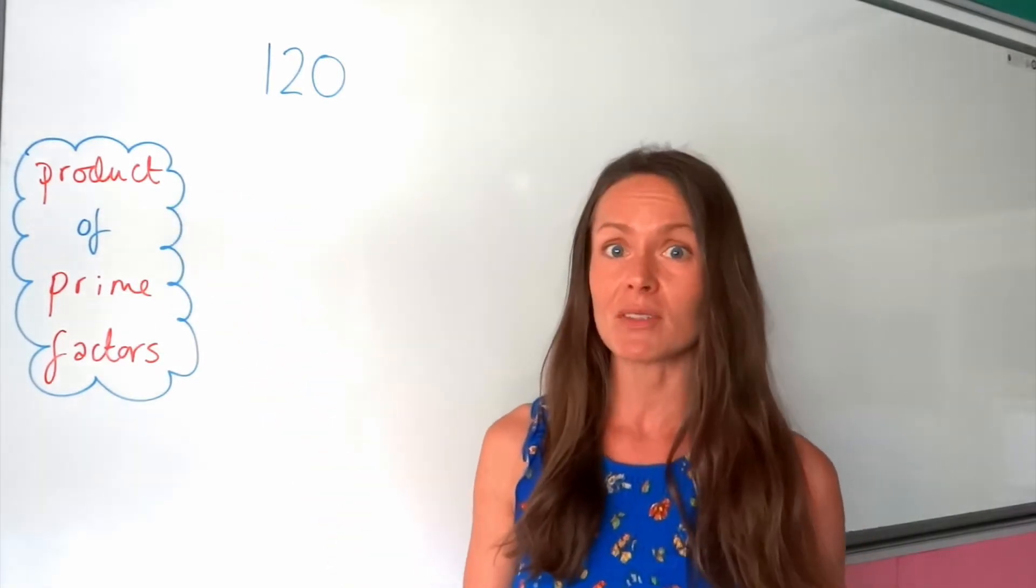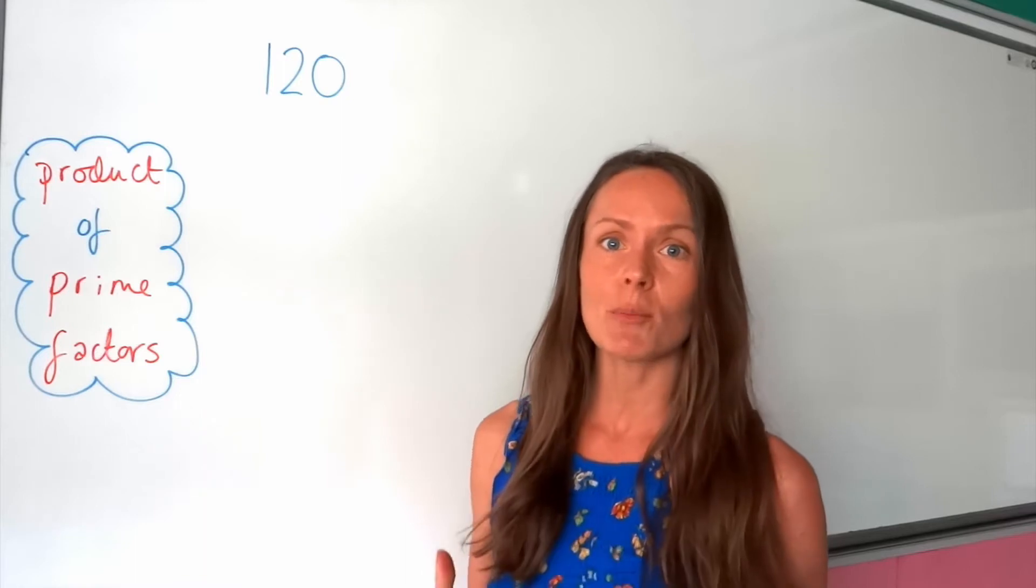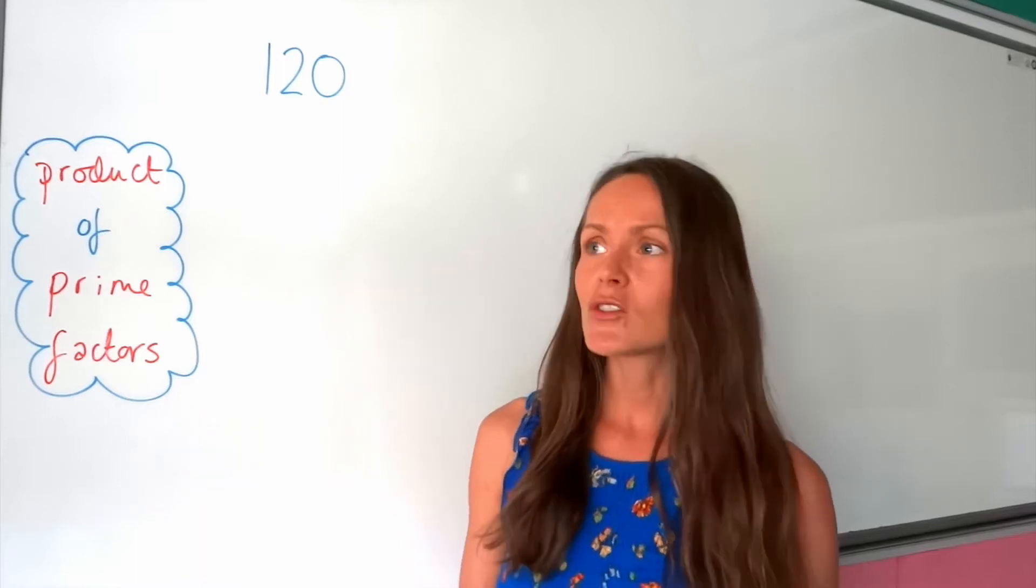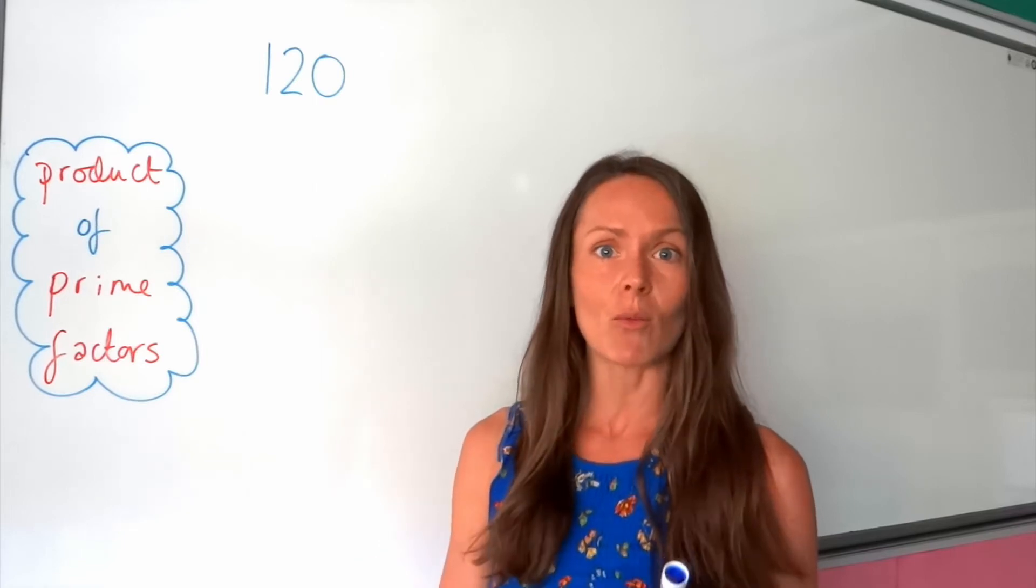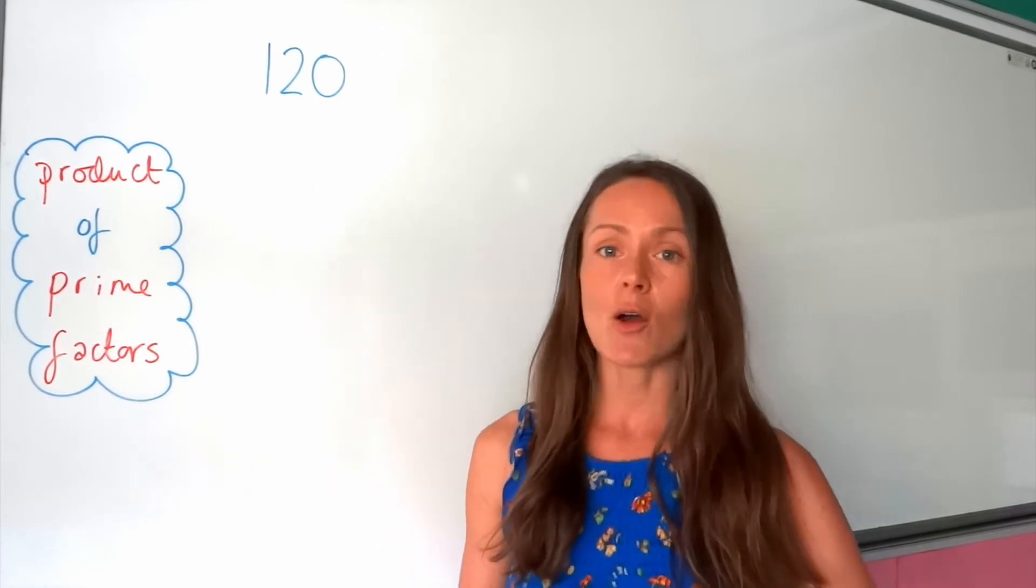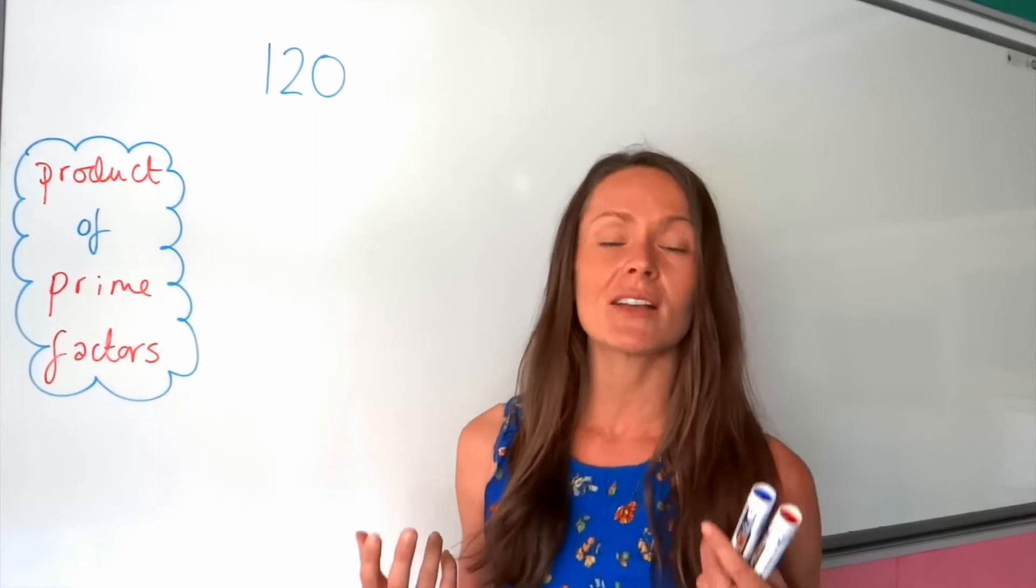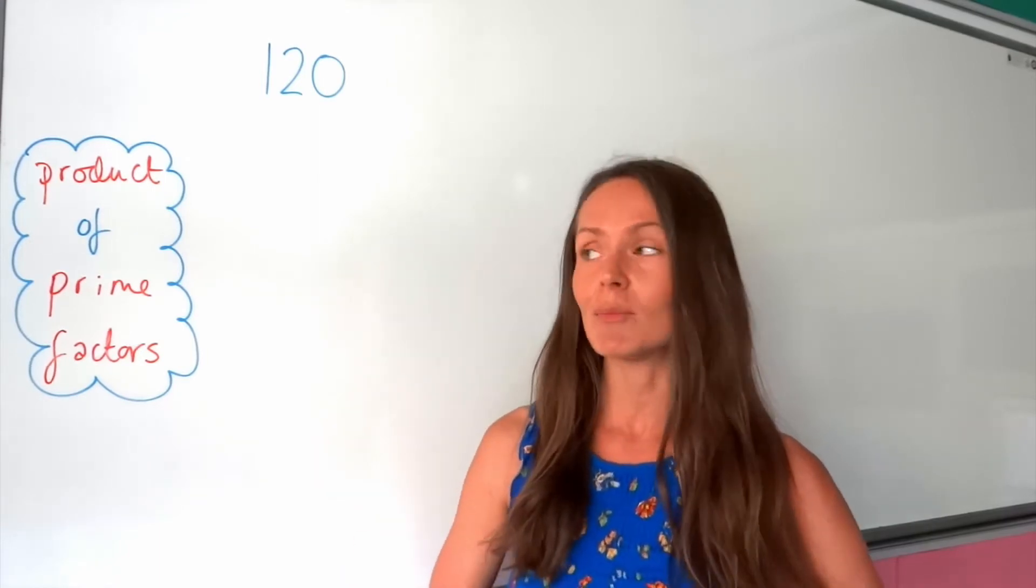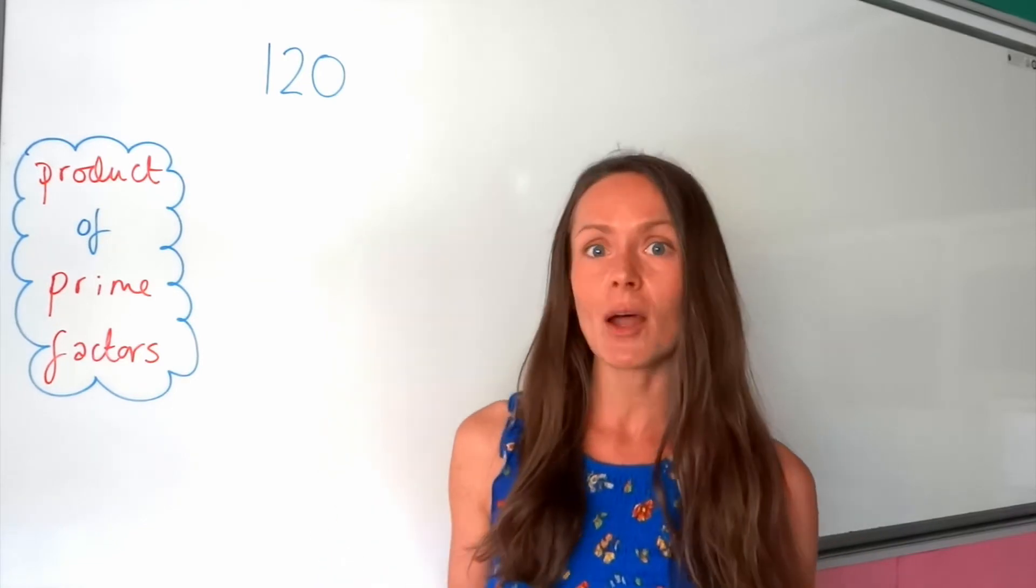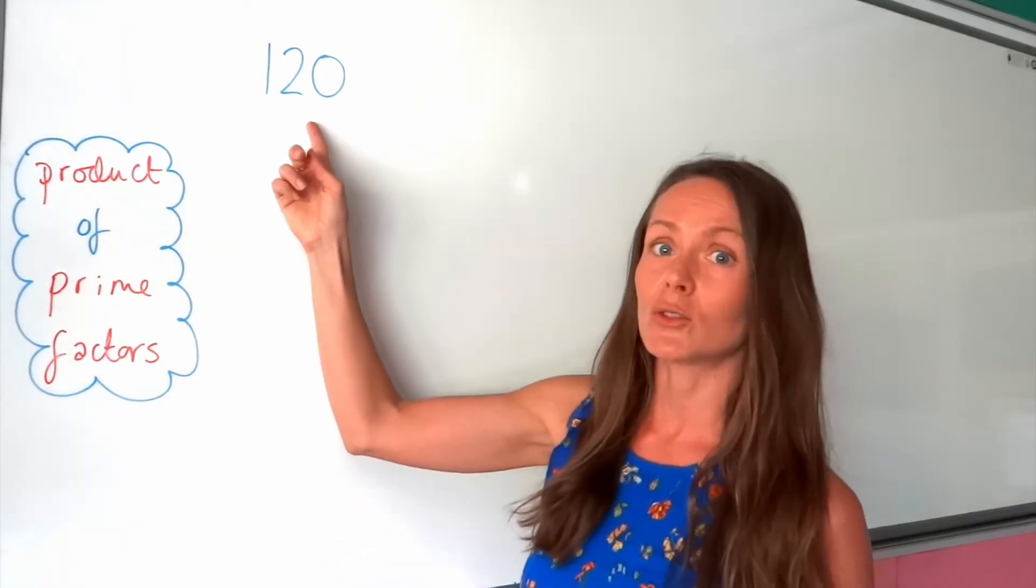So hopefully you know what prime numbers are. Prime numbers, they're just numbers that have two factors. So for example, 7. You can only divide the number 7 by 1 and 7. Another example could be 11, because it only has two factors, 1 and 11. So they're examples of prime numbers, and factors are just numbers that fit exactly into 120.